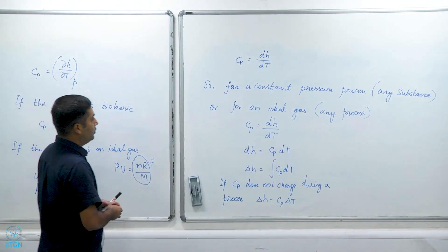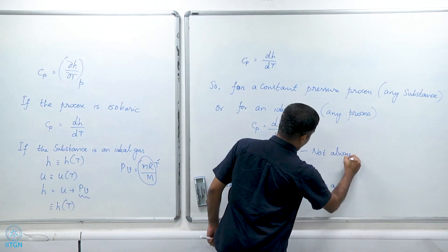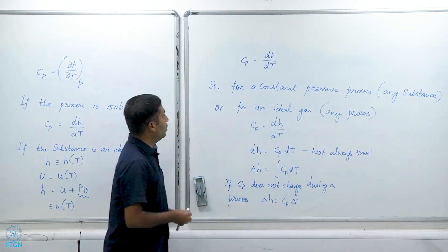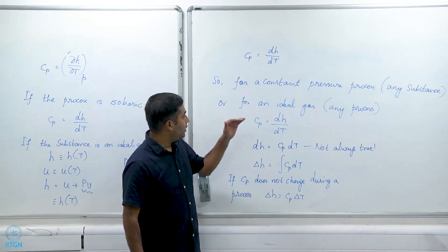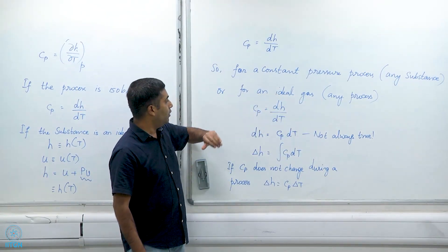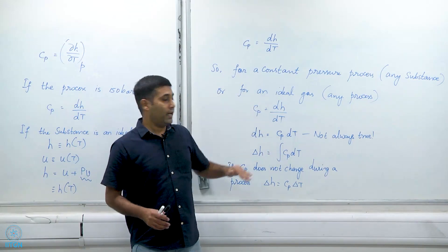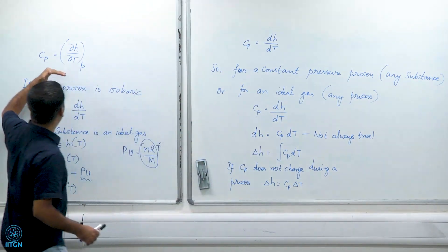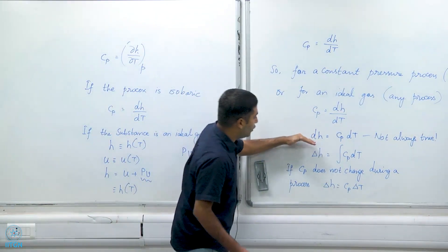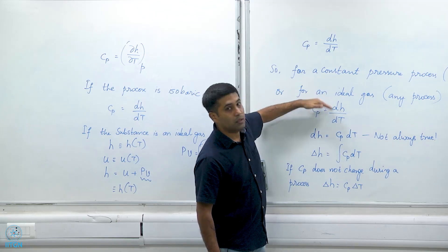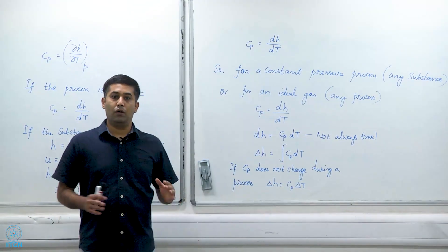It is very important to remember that ΔH = Cp ΔT is not always true. It is true only if the process is a constant pressure process for any substance, or if the substance is an ideal gas — in which case the enthalpy is just a function of temperature. If neither condition is satisfied, the only thing that is universally true is the definition Cp = ∂h/∂T at constant pressure. And ΔH = Cp ΔT holds only if Cp does not change appreciably over the process.